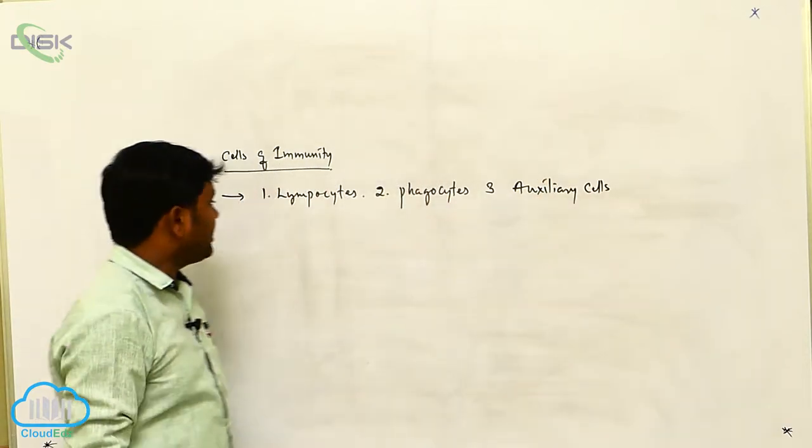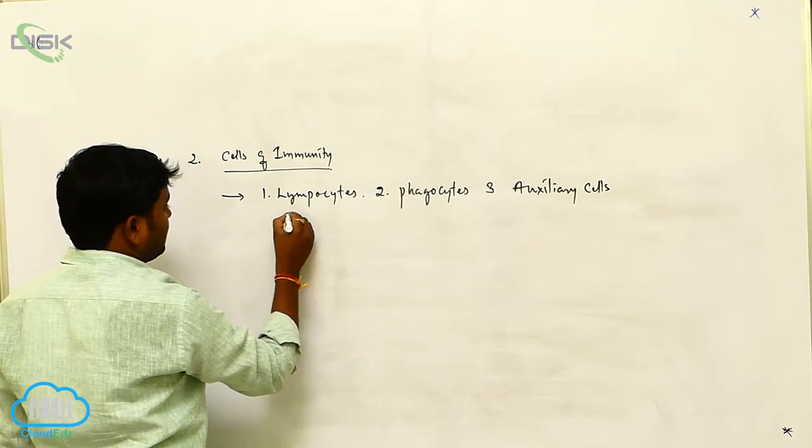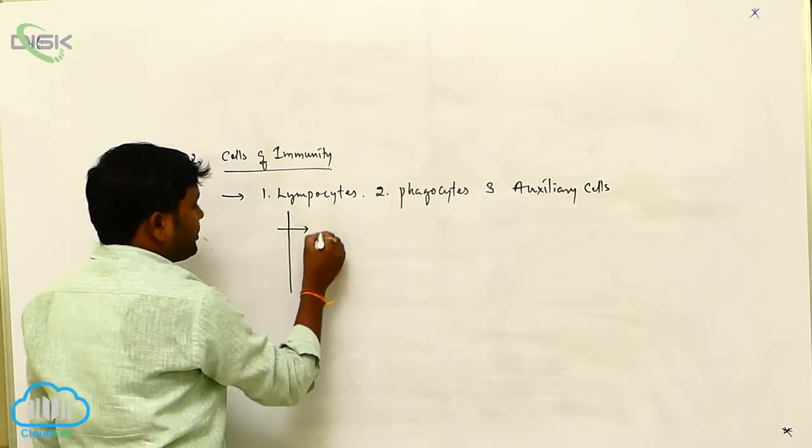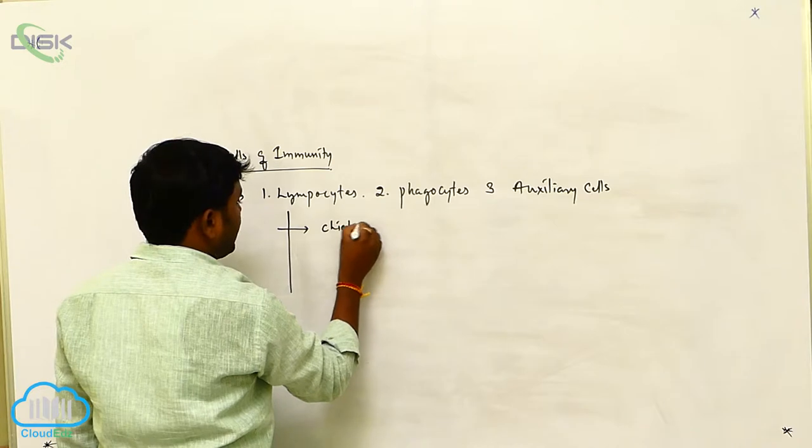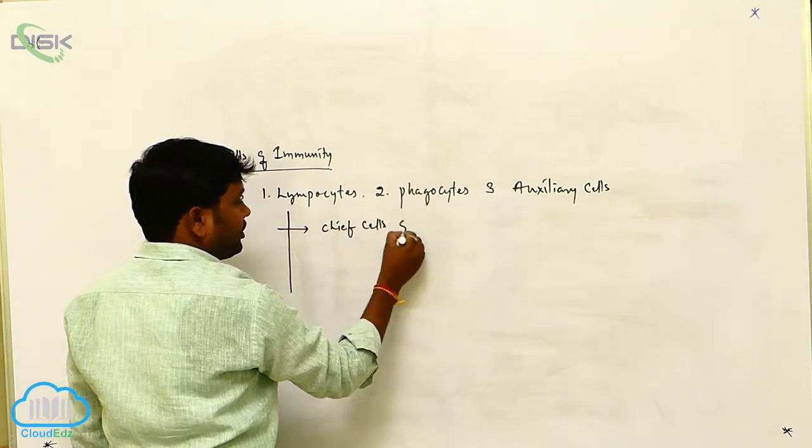Let's see the first one, lymphocytes. These are the chief cells of the immune system.